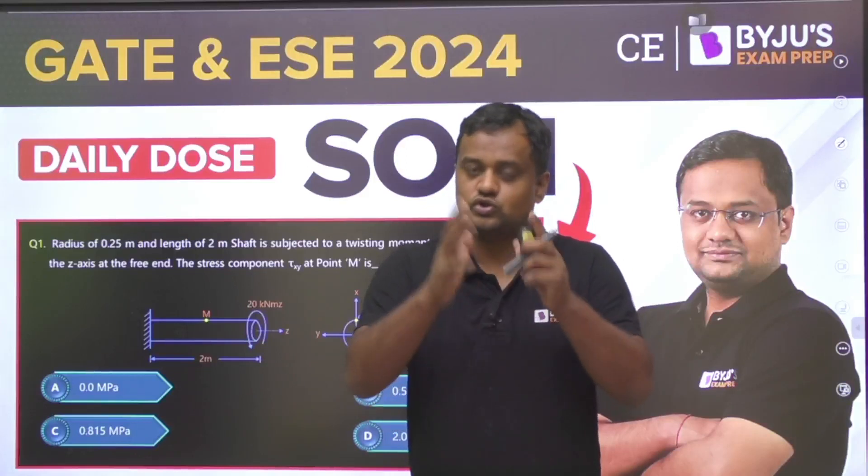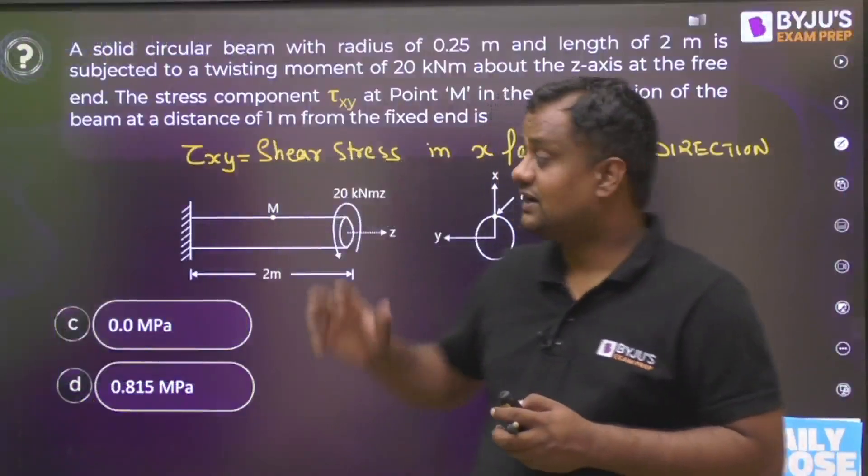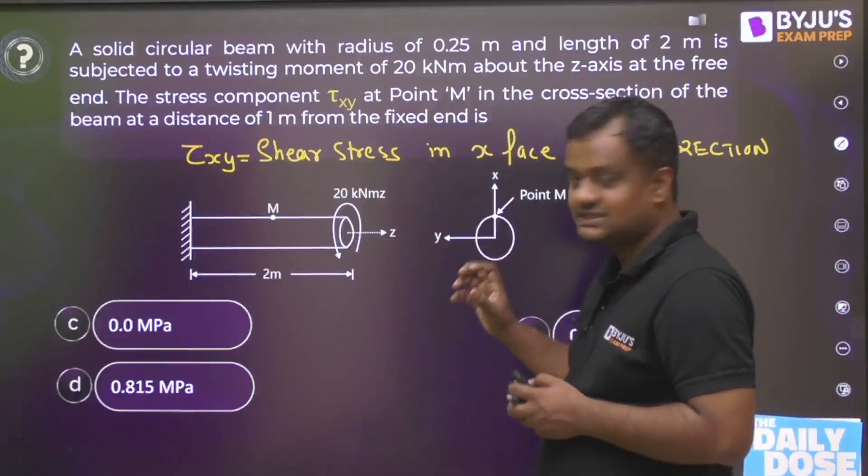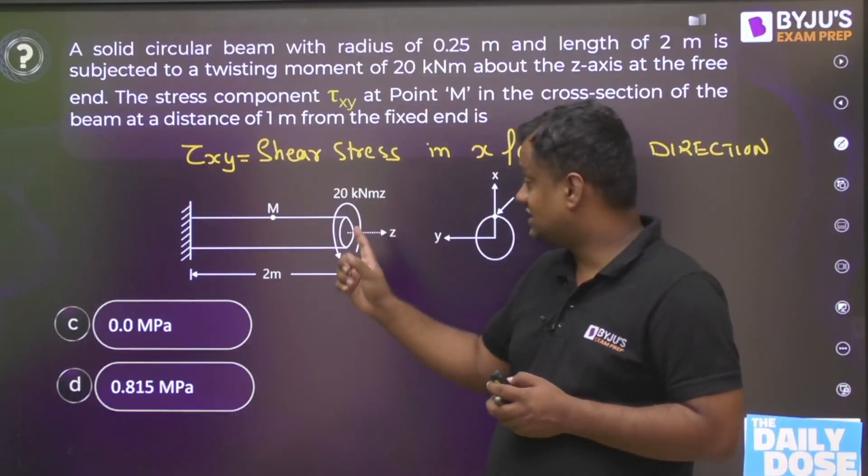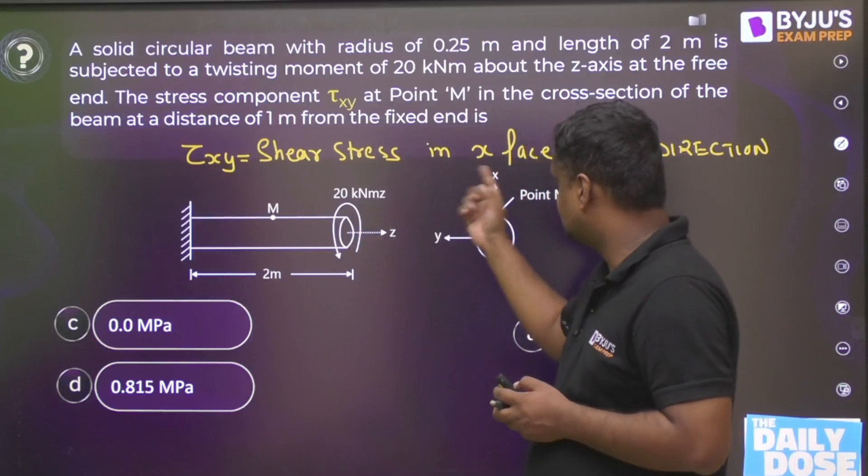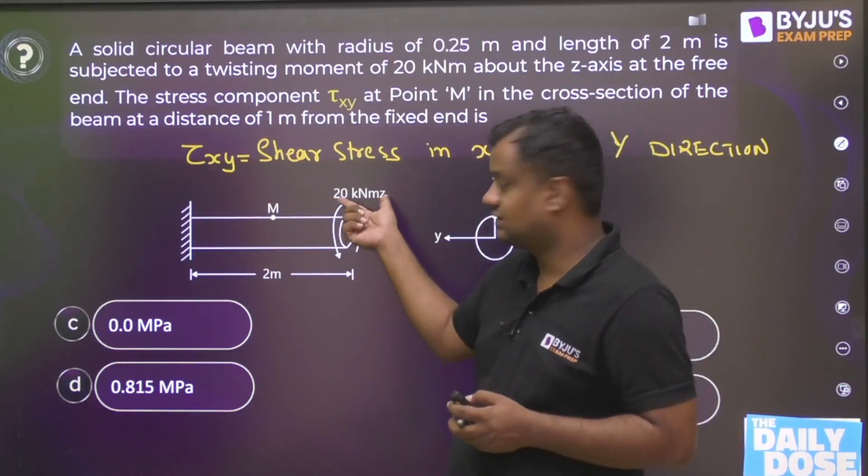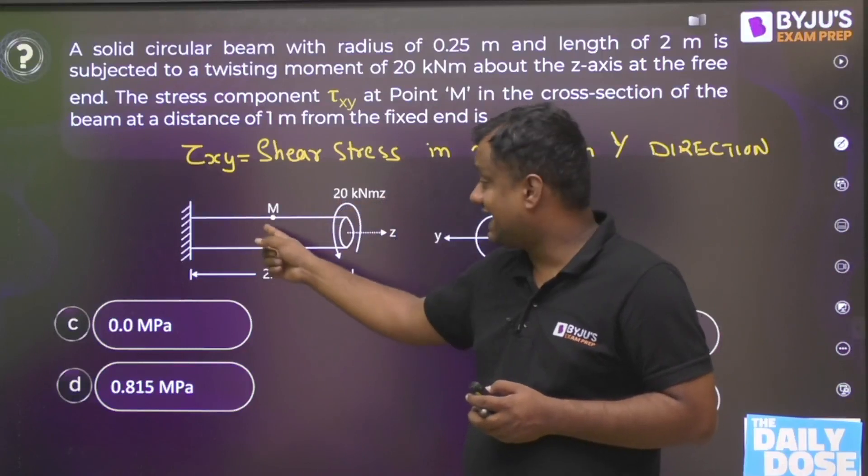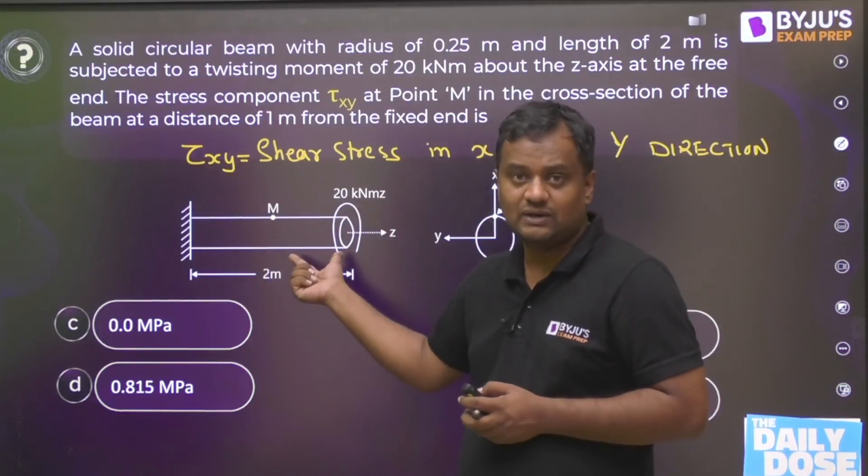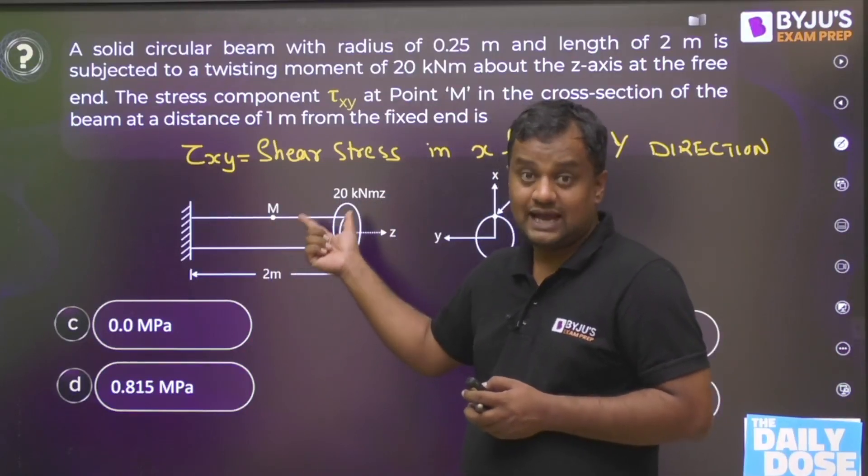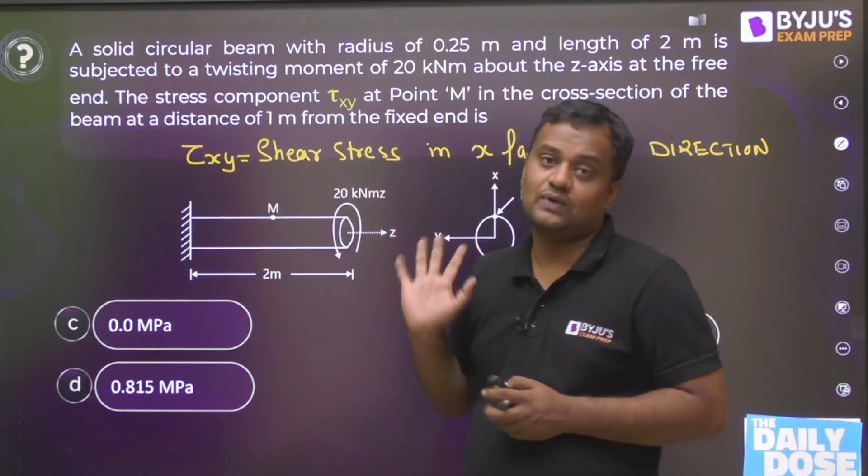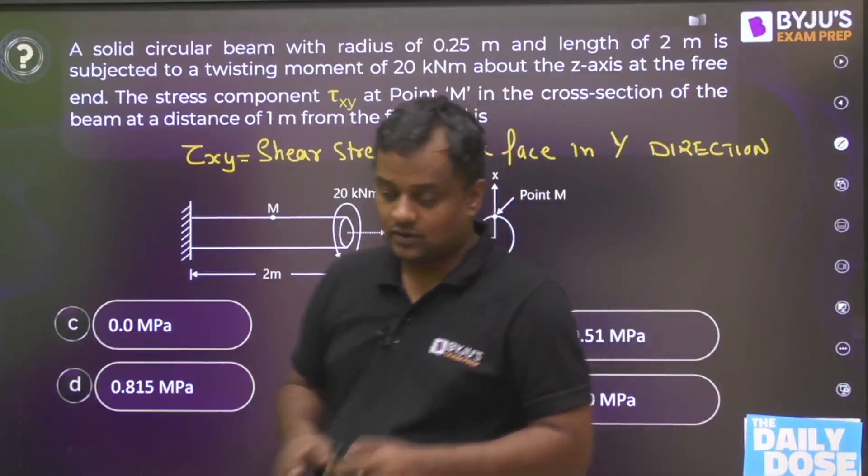What is this question? Let me see. Here a shaft was given, a circular shaft having radius 0.25m. Directions were given like this: this is Z, if I cut a section here this is X, this is Y. The radius is 0.25, the torque is given, and at point M which is midway at 1 meter from the free end, at that M point tau_XY shear stress is asked.